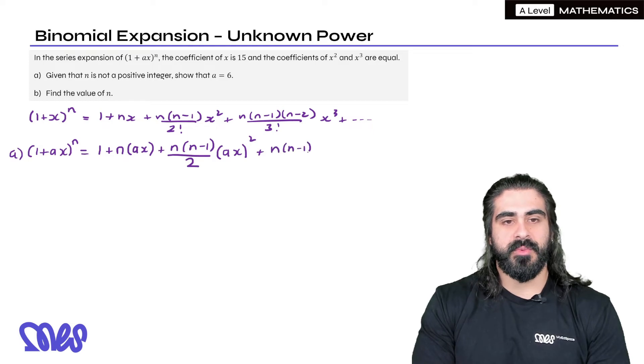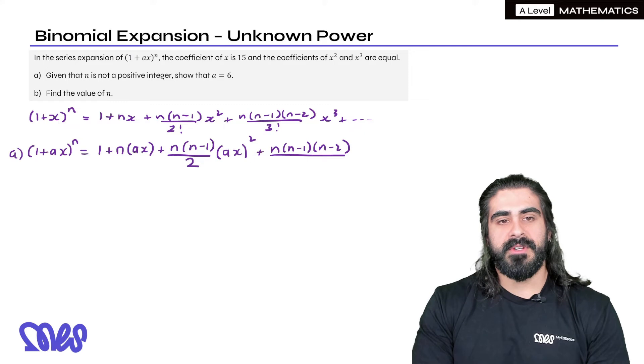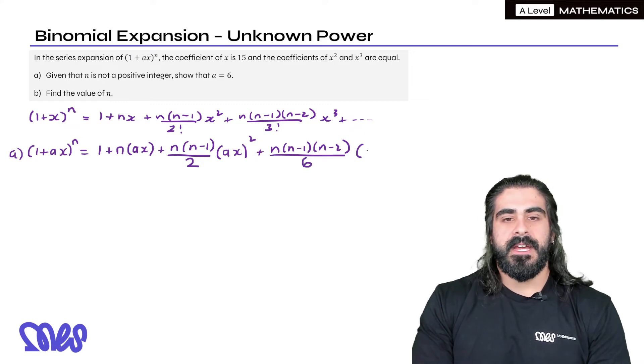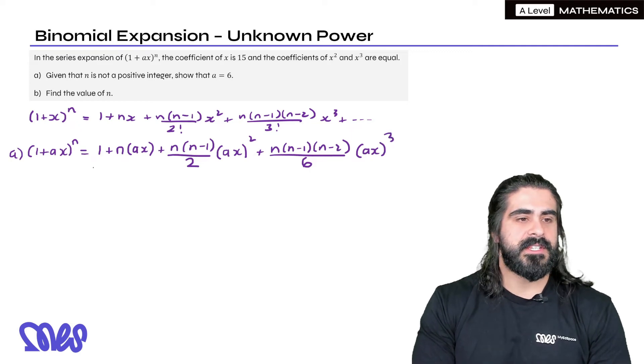Then we have n(n minus 1)(n minus 2). 3 factorial means 3 times 2 times 1 which is 6. And then we have x cubed. Now we just need to simplify.